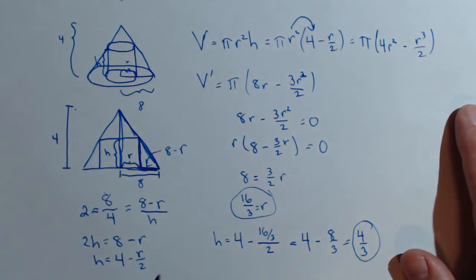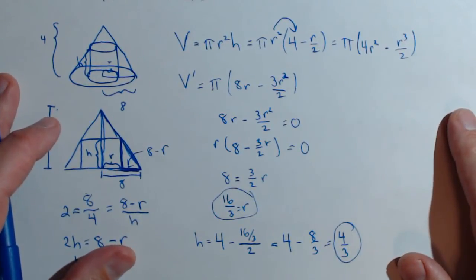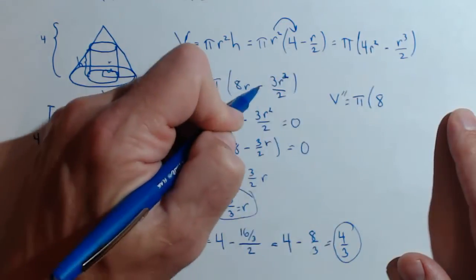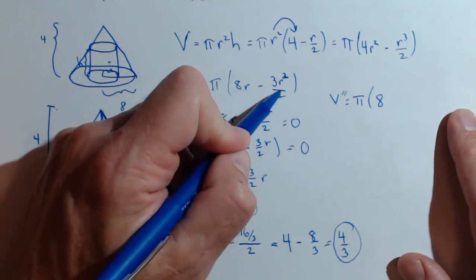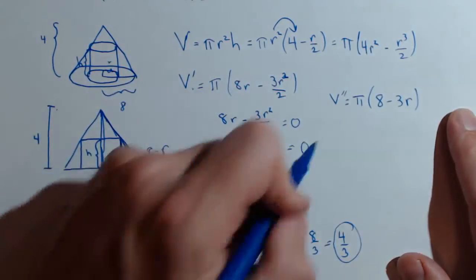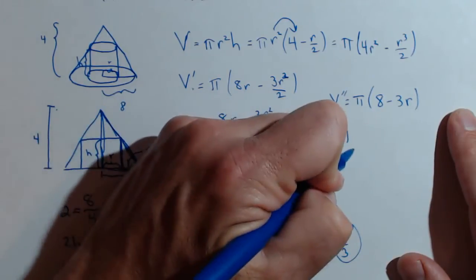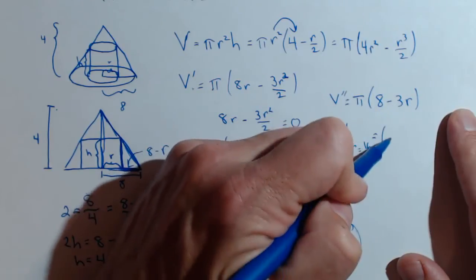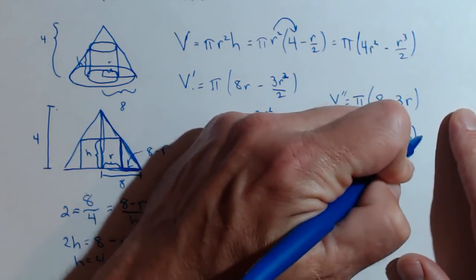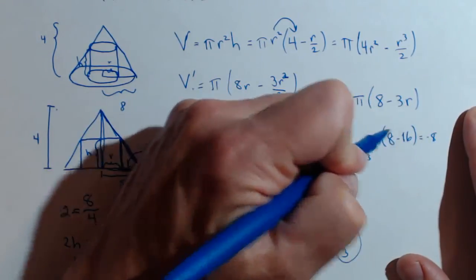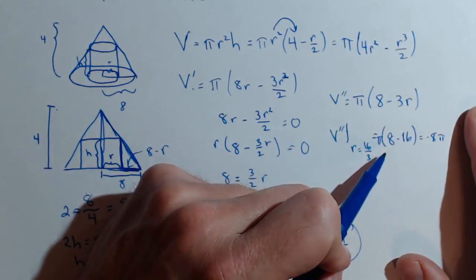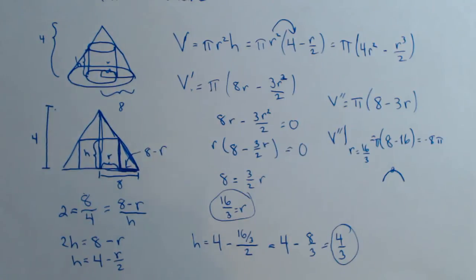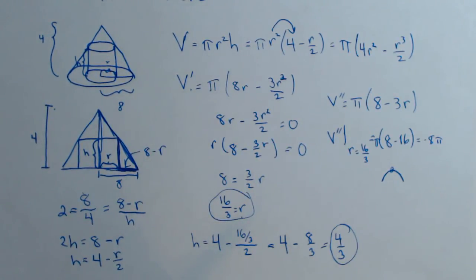Let's verify that this is in fact a maximum. We look at V double prime, which is π times (8 minus 3r). We evaluate V double prime at r equals 16 thirds: 8 minus 3 times 16 thirds gives 8 minus 16, which is negative 8, so V double prime equals negative 8π. The second derivative is negative, meaning the function is concave down — that means we have, in fact, a maximum. This confirms that these dimensions give us the maximum volume for the cylinder.